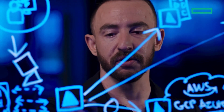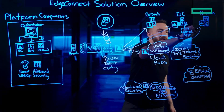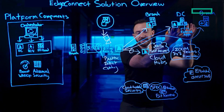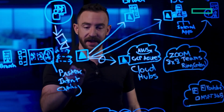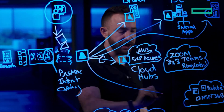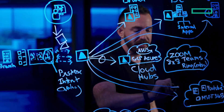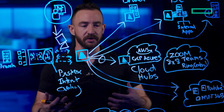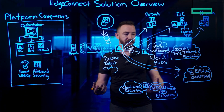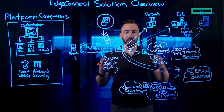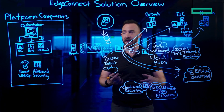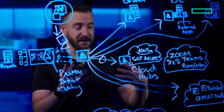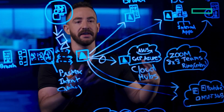EdgeConnect also includes built-in routing protocol capabilities including BGP and OSPF for easy integration with existing MPLS sites. Intelligent adaptive internet breakout allows EdgeConnect to securely and intelligently steer traffic directly over the internet for critical SaaS services, which will experience better performance directly over the internet as opposed to backhauling them to a cloud hub or to the data center introducing additional latency. Services such as Microsoft 365 specifically recommend this method of access into their platforms.